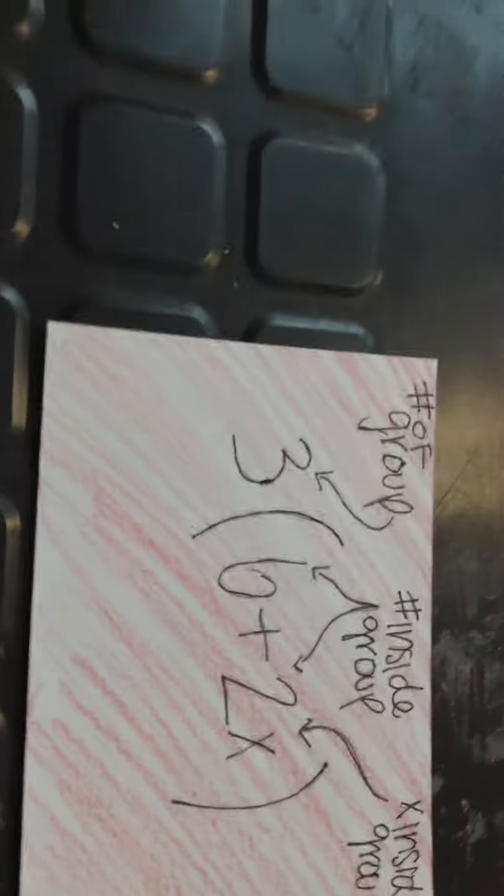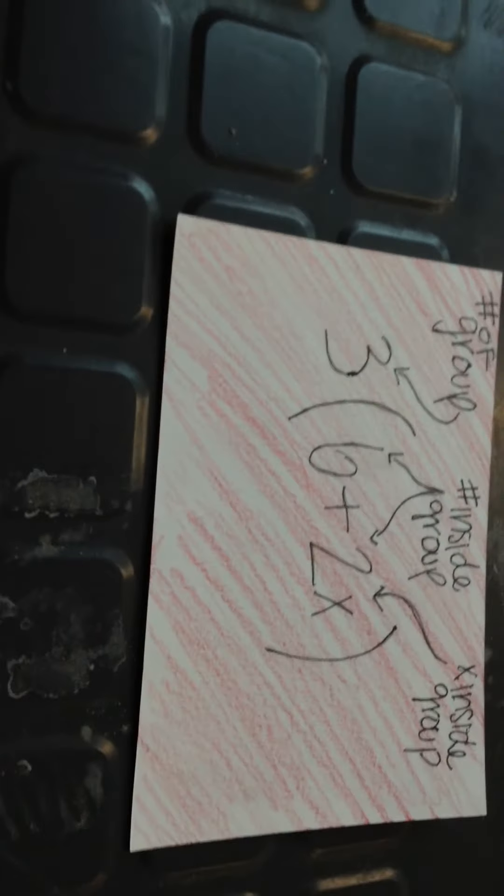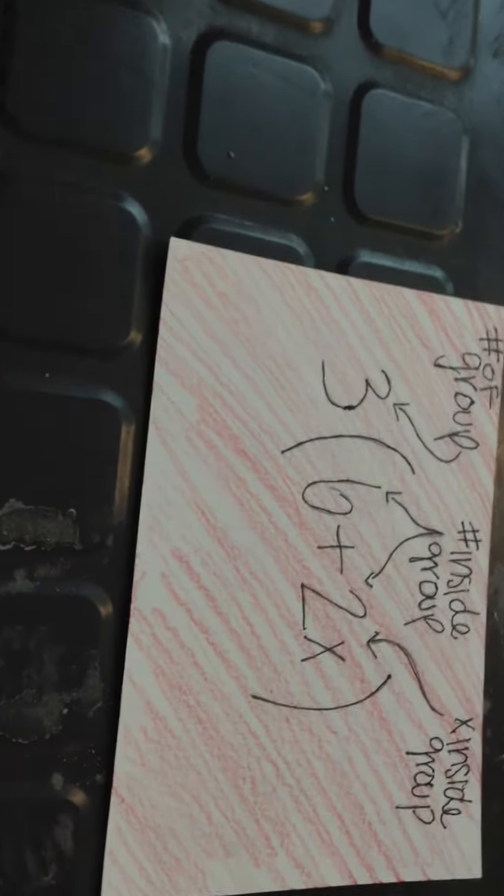Distributive property. The three represents the number of groups, and the six represents the number inside the group, and the x represents how many x's, which is two x.